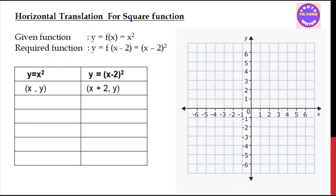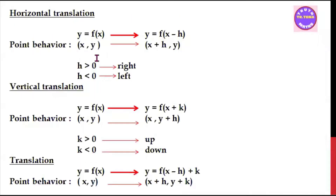So if you have a horizontal translation, let's start with the horizontal translation. The horizontal translation is y equals a times x minus h to the power of 2.